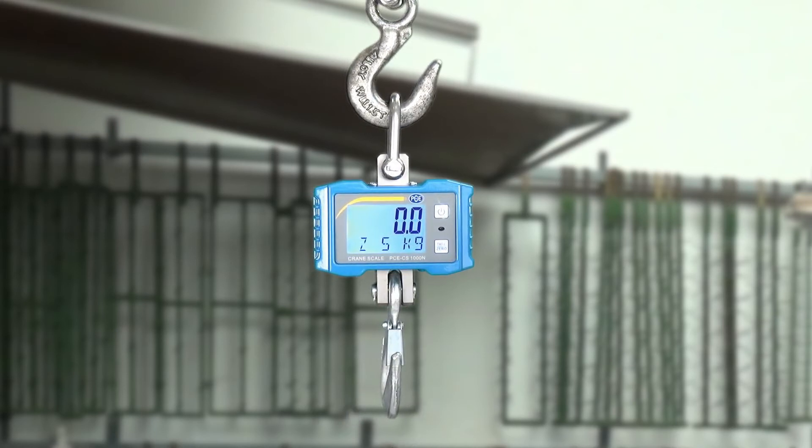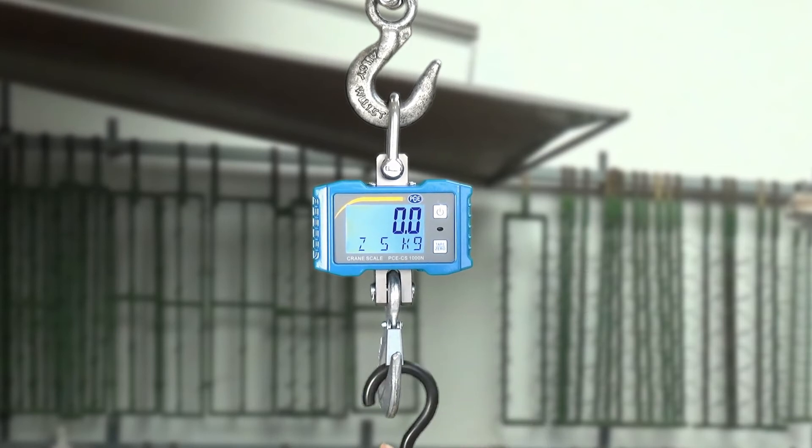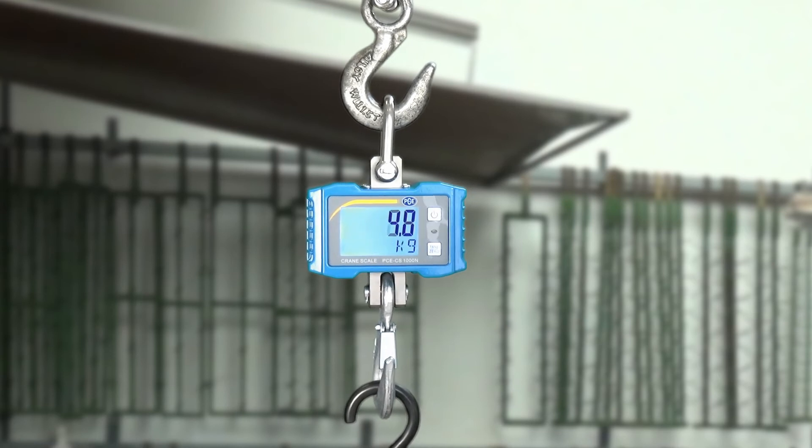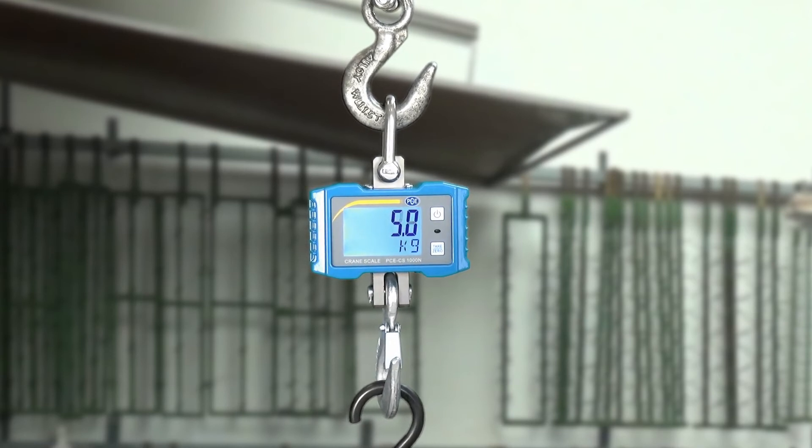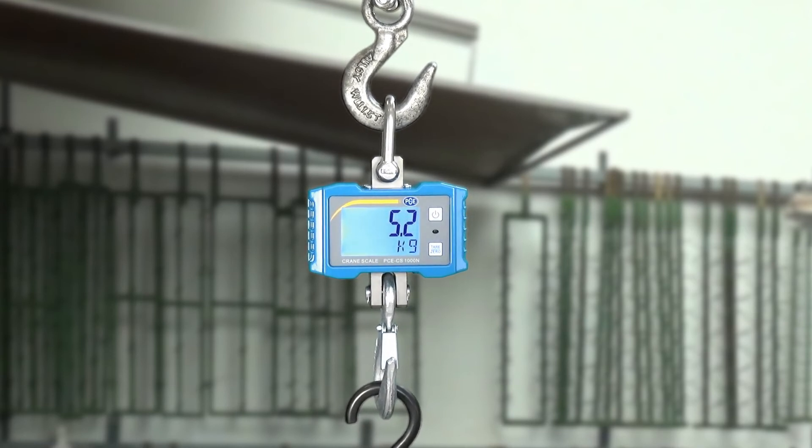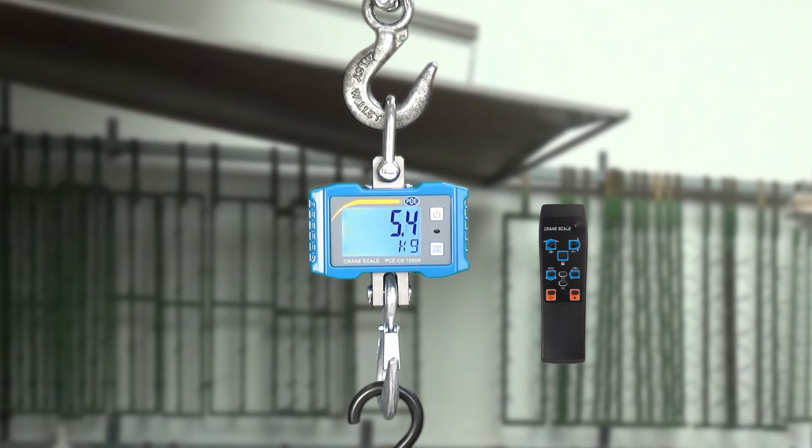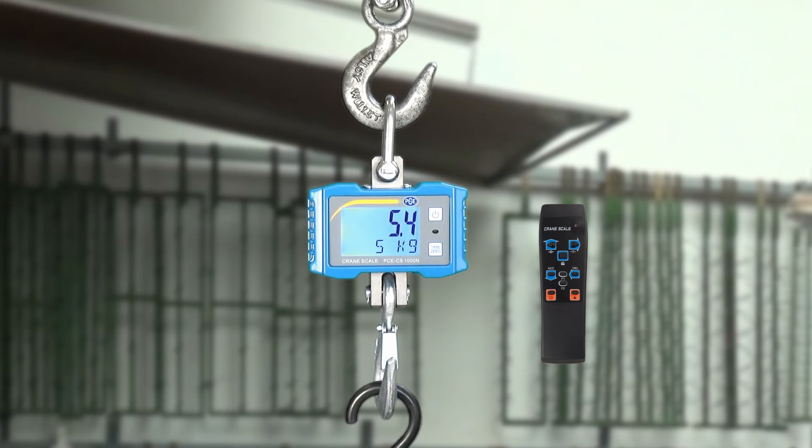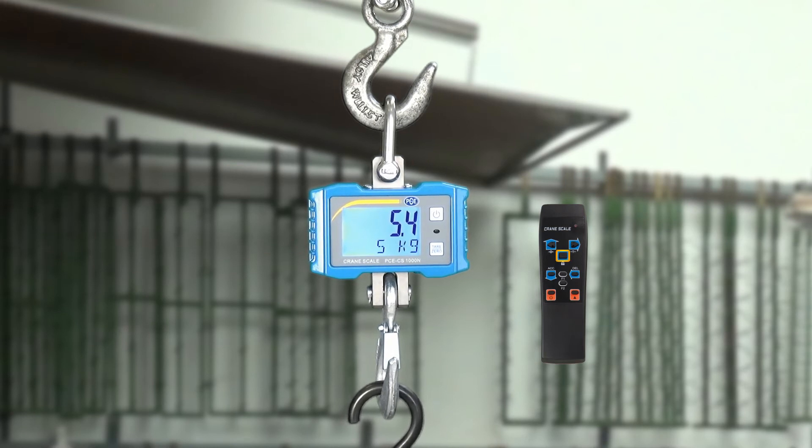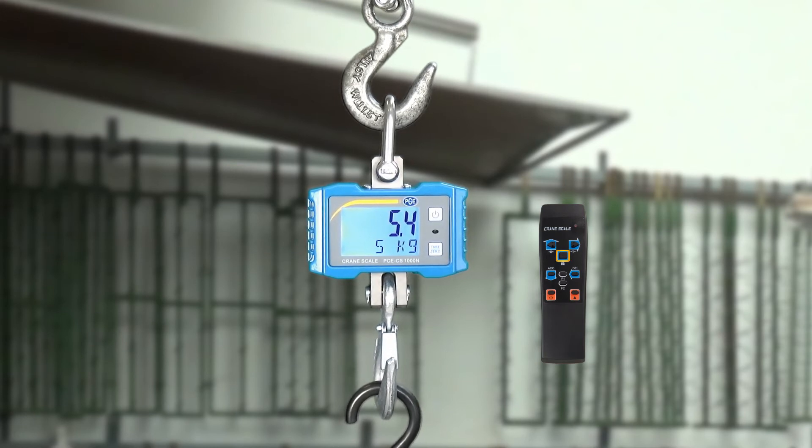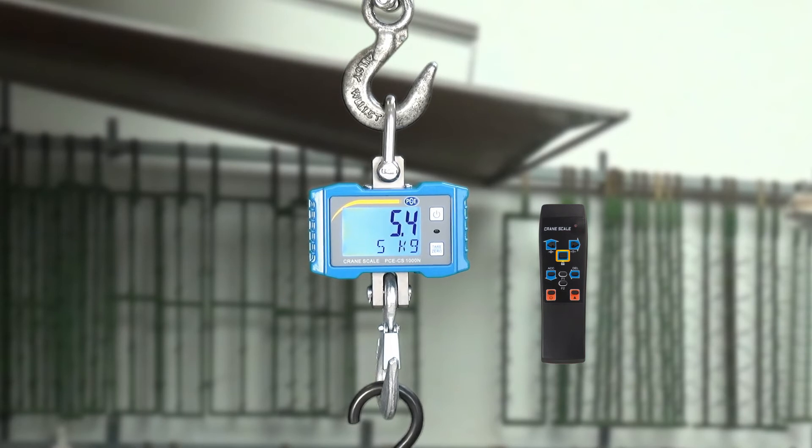The crane scale has also hold function. Means that when I have a weight, a load, I can using the remote control freeze it in the display. For this there is a button on the remote control where a lock is on it. When I press this hold button, in the display a H is shown.